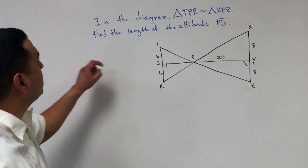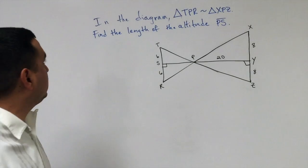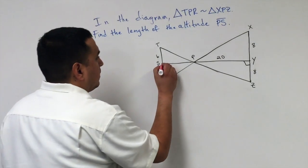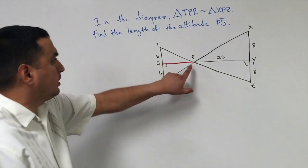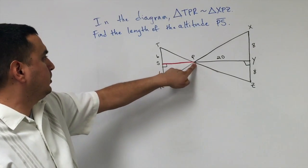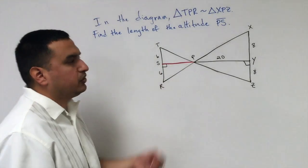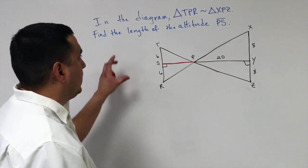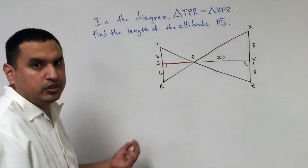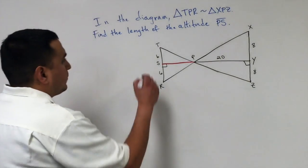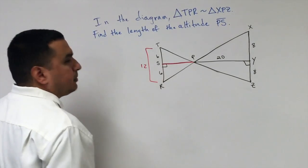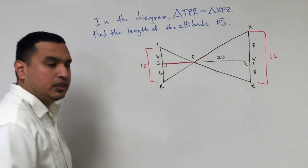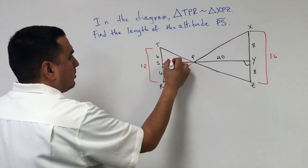In this example, triangle TPR is similar to triangle XPZ. Find the length of altitude PS. This is the altitude because it goes from the vertex to the opposite side at a 90 degree angle. Remember, altitude is another word for height. If triangles are similar, the altitudes are also similar. First, TR equals 12, adding 6 and 6. XZ equals 16, adding 8 and 8. I'll make the altitude X.